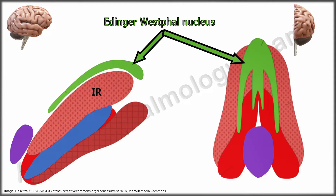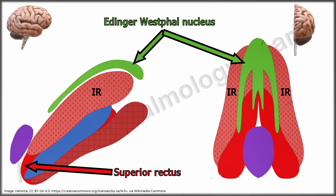The inferior rectus motor neurons lie dorsally, primarily in the rostral portion of the ipsilateral nucleus. The superior rectus is the medial-most subnucleus. Fibers from this subnucleus cross the midline, pass through the superior rectus subnucleus of the opposite side without synapse, and then turn ventrally to enter the fascicle of the oculomotor nerve. Thus, each superior rectus subnucleus innervates only the contralateral superior rectus.